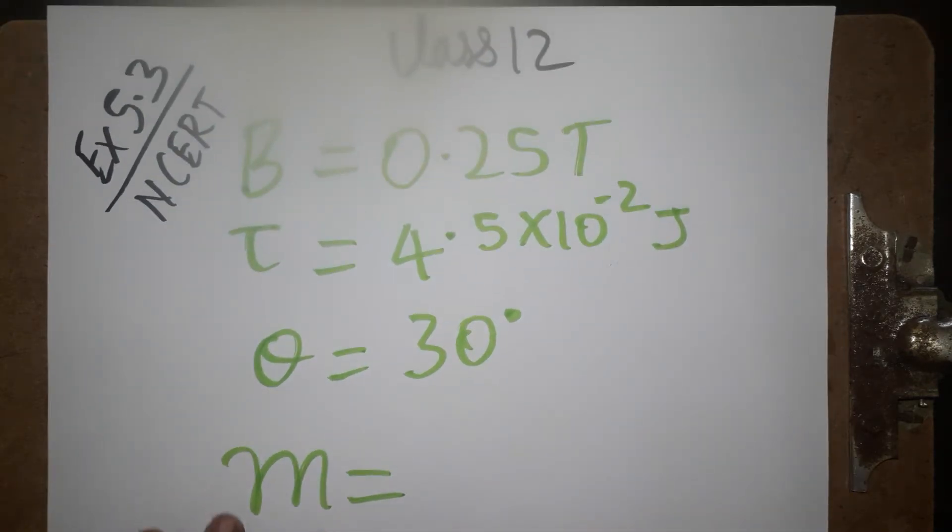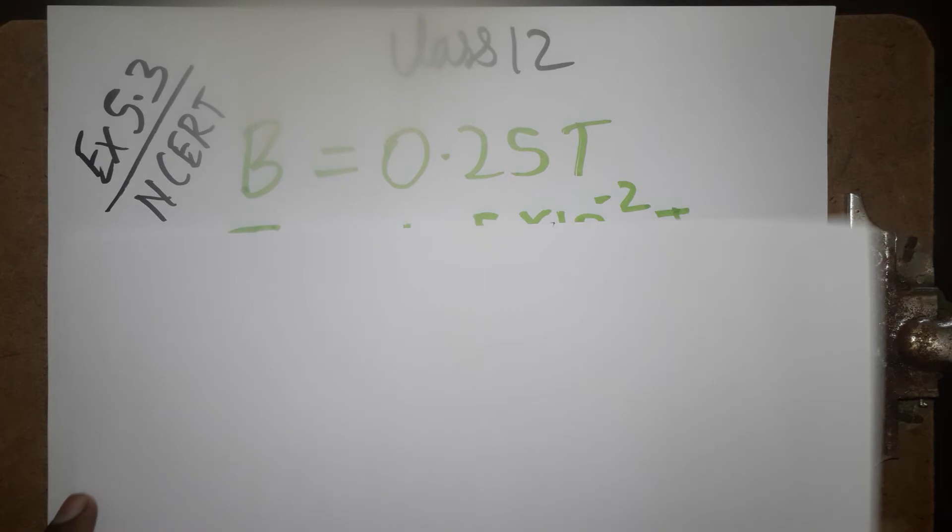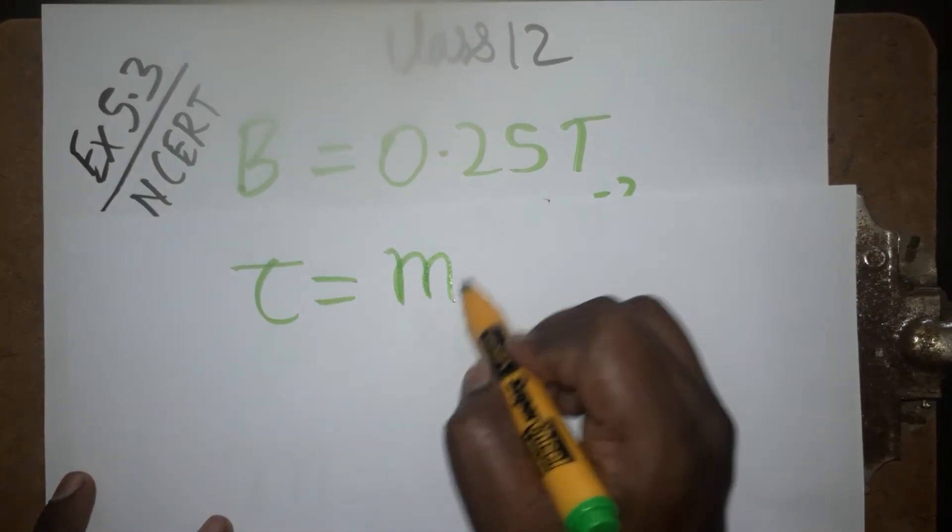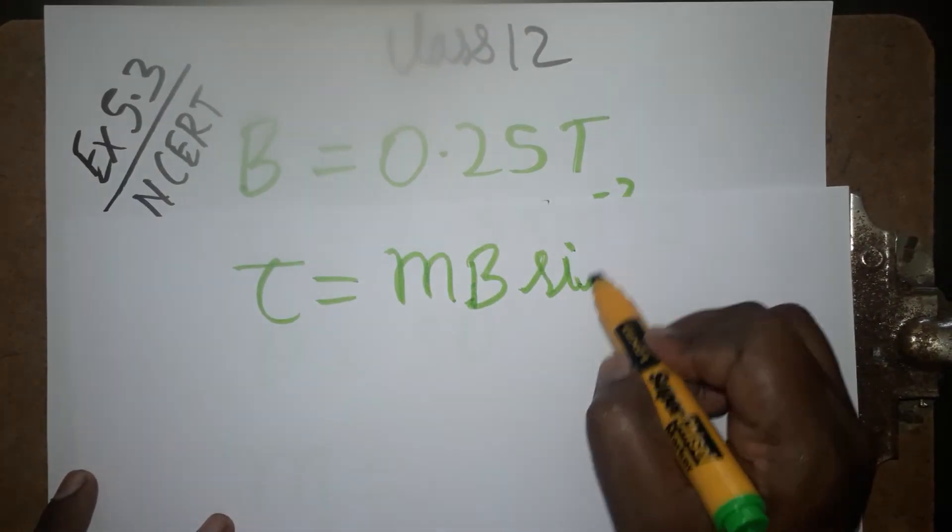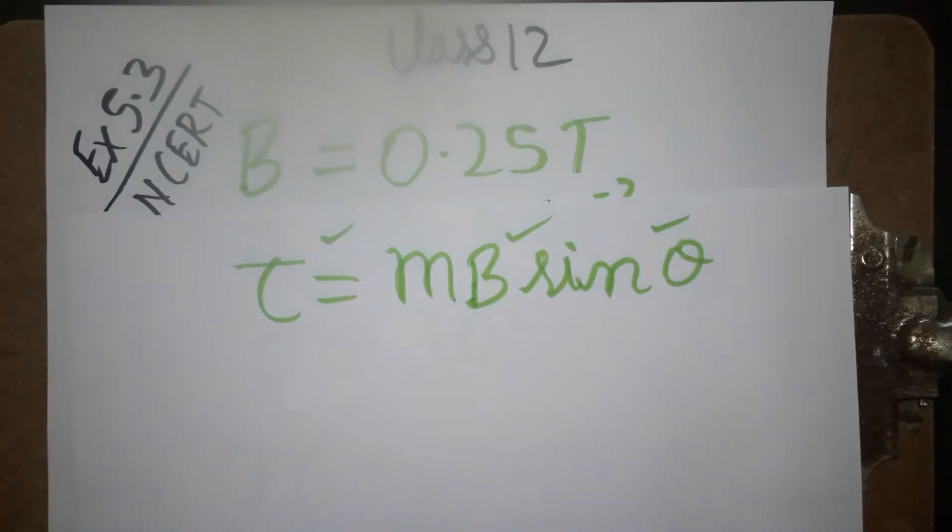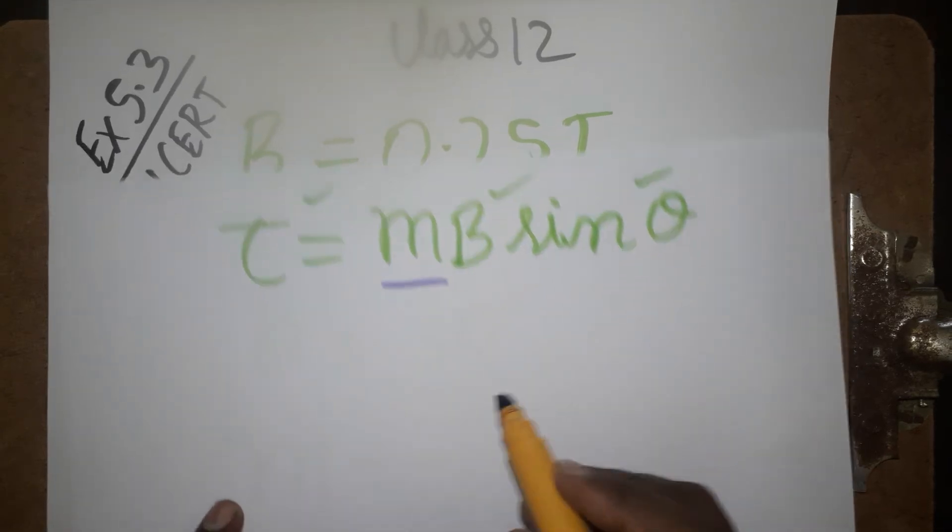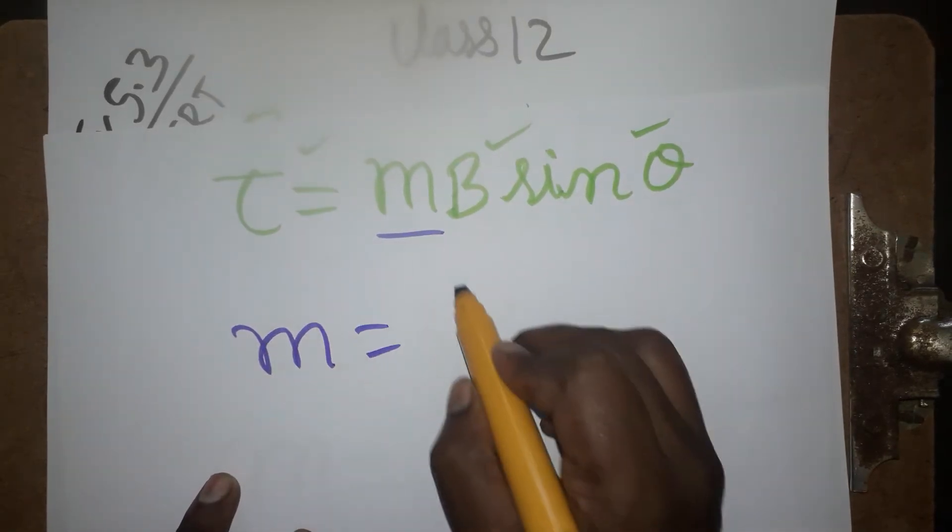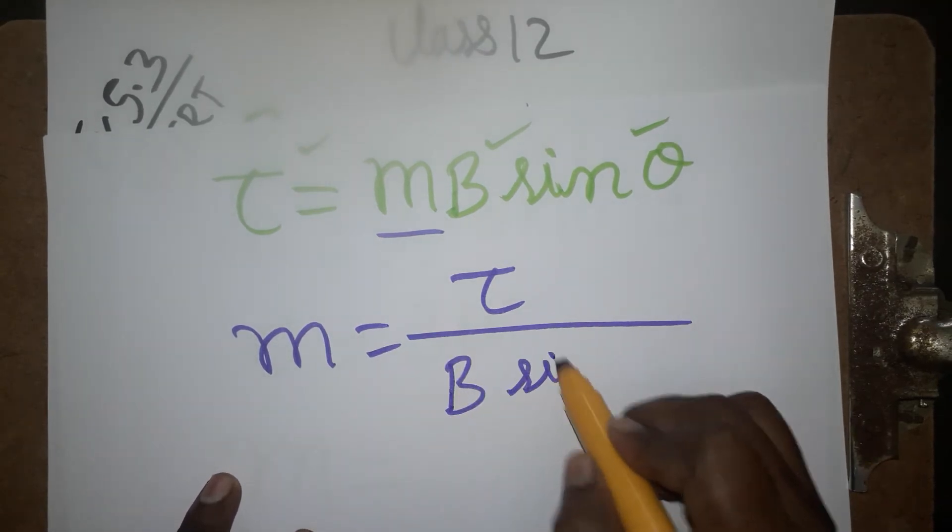If we know the relation between all 4 terms, it's very easy. Torque equals M·B·sinθ. Torque is given, B is given, theta is given. Only thing is we should find magnetic dipole moment, small m. So M equals torque divided by B·sinθ.